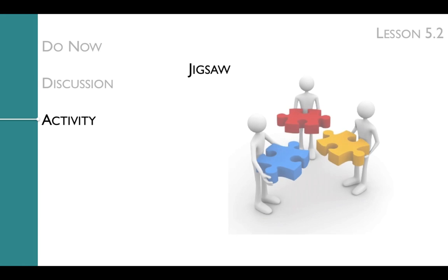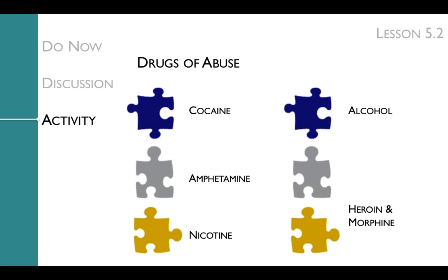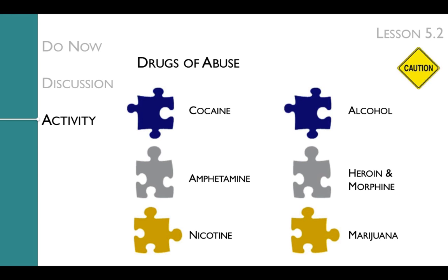During the jigsaw, students will complete jigsaw readings which allow them to explore the mechanisms by which drugs of abuse affect synaptic transmission and the reward pathway. The drugs covered in the jigsaw are cocaine, amphetamine, nicotine, alcohol, heroin and morphine, and marijuana. A caution: you'll want to be sure to double-check that the jigsaw readings are at an appropriate reading level for your students.